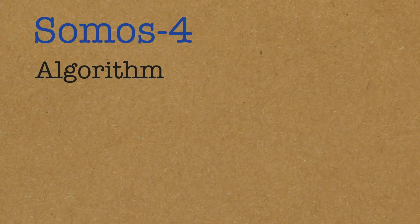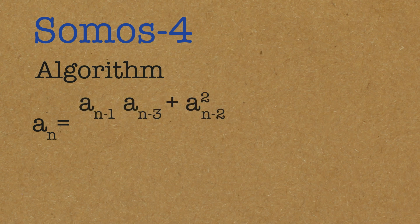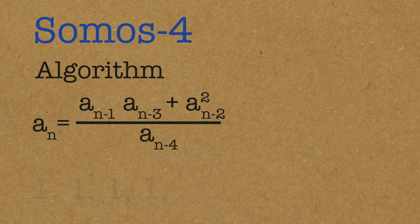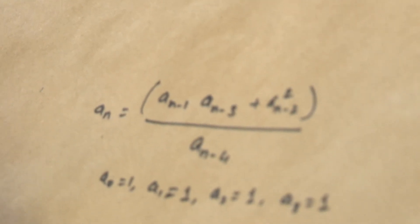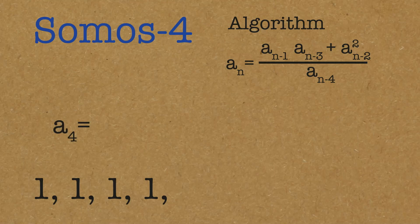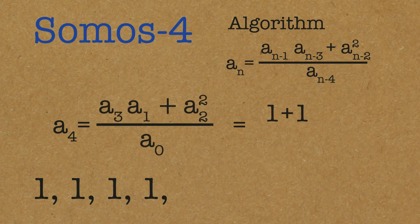Now we go to Somos 4. Will we see something interesting there? The algorithm is: a_n = (a_{n-1} times a_{n-3} + a_{n-2} squared) divided by a_{n-4}, with a_0 = 1. So it starts with a string of four 1s. What numbers does that spit out? a_4 is going to be (a_3 times a_1 + a_2 squared) divided by a_0 = (1 + 1) / 1, which is 2.